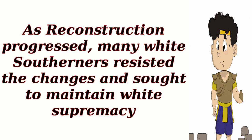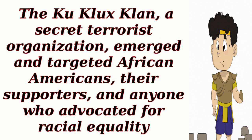As Reconstruction progressed, many white Southerners resisted the changes and sought to maintain white supremacy. The Ku Klux Klan, a secret terrorist organization, emerged and targeted African Americans, their supporters, and anyone who advocated for racial equality.